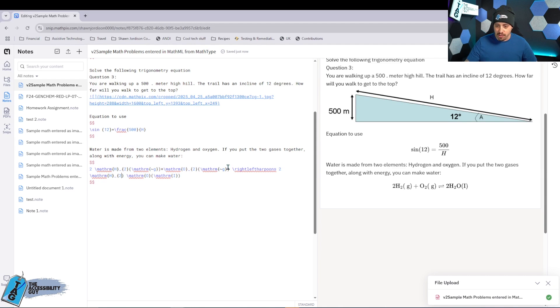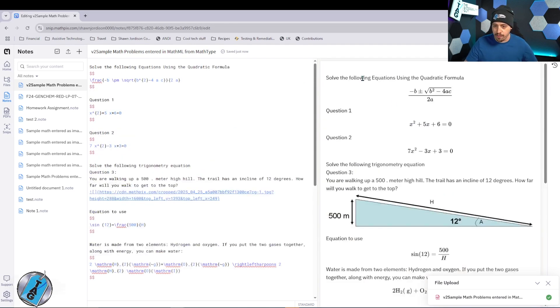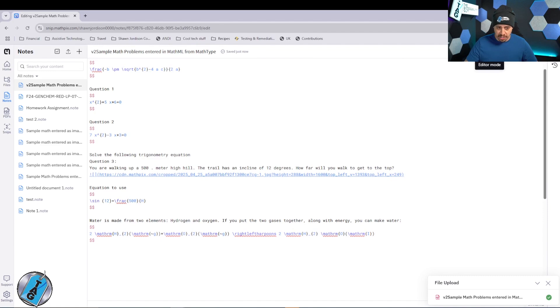We even have the ability to have some chemistry equations in there. And this is super useful for us to edit the document. Now what we can do is we can insert handwritten equations, we could insert handwritten diagrams, or we can go into the editor mode, which is kind of cool.